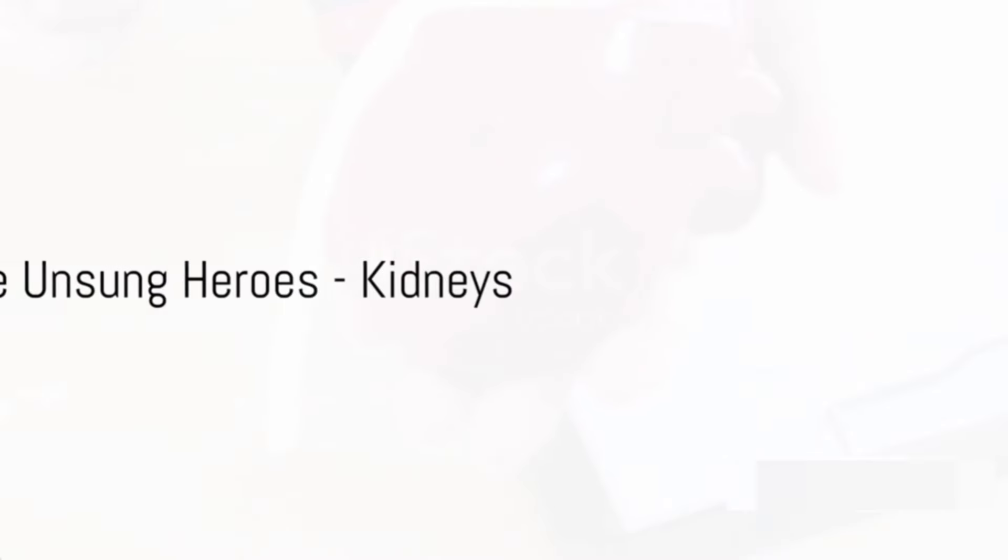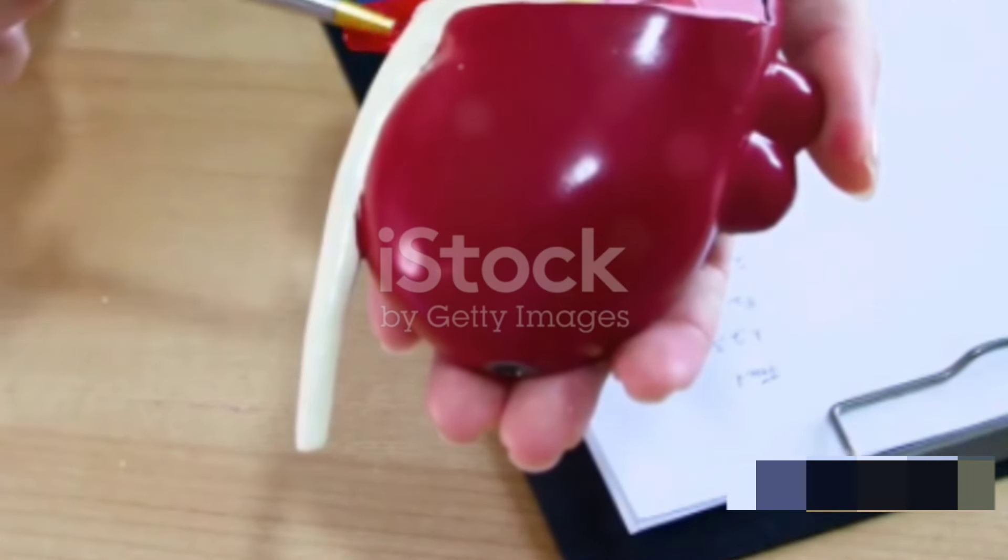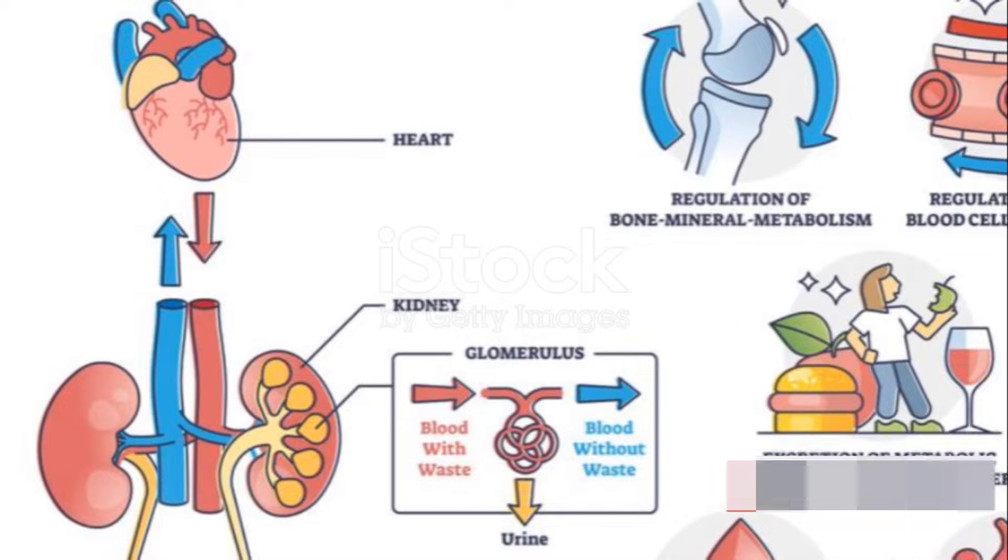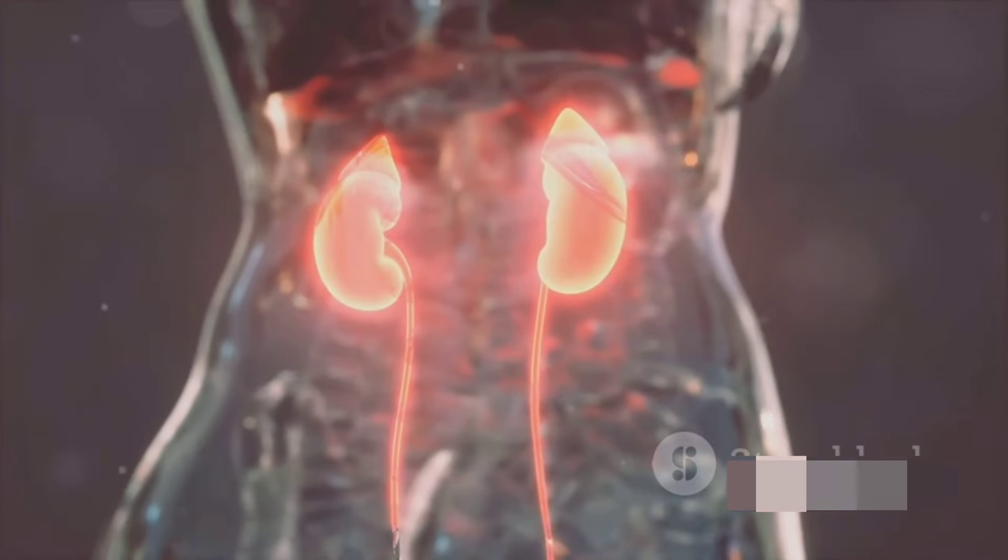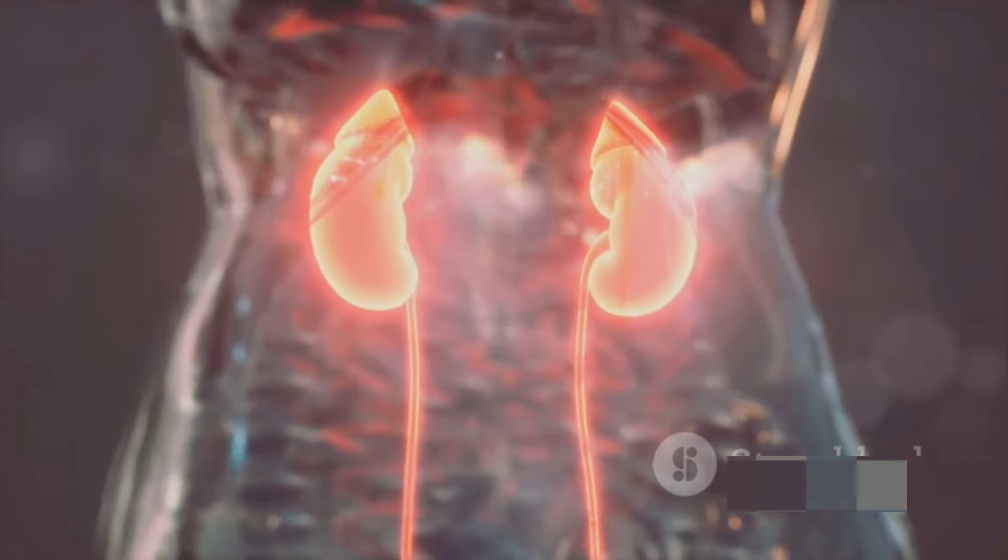And speaking of flowing liquids, did you know the highest blood flow in your body is not, as you might expect, in your heart, but in your kidneys? These unsung heroes of the human body are hard at work filtering your blood with a staggering amount of blood flowing through them every minute.